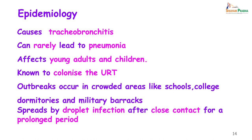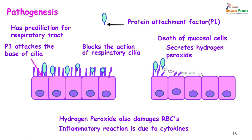Mycoplasma are known to cause tracheobronchitis and very rarely does the disease progress to become a pneumonia. It usually affects young adults and children. It is known to colonize the upper respiratory tract and outbreaks occur in crowded areas like schools, colleges, college dormitories and military barracks. It spreads by droplet infection after close contact for a prolonged period. Rani developed the infection almost two weeks after her best friend Maya had got the infection, because of prolonged contact with her — that is where she must have picked it up.